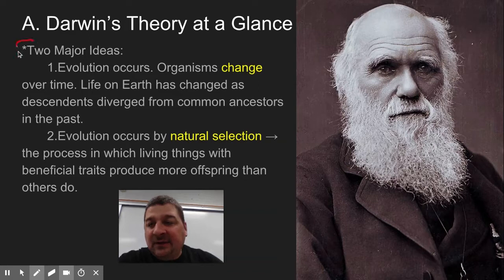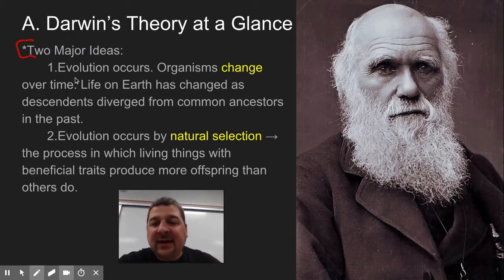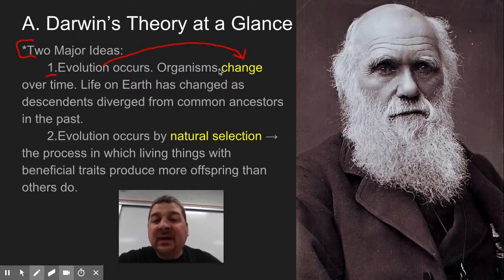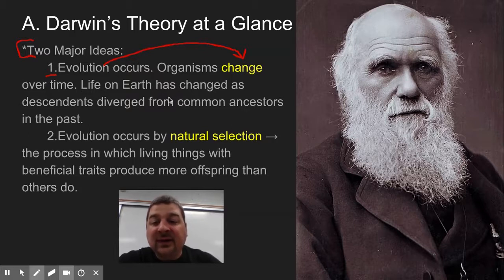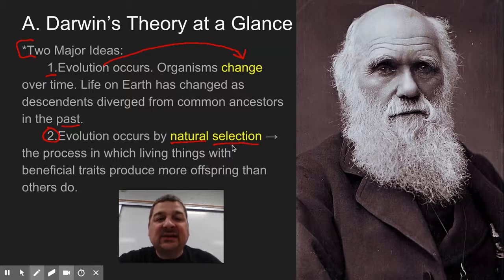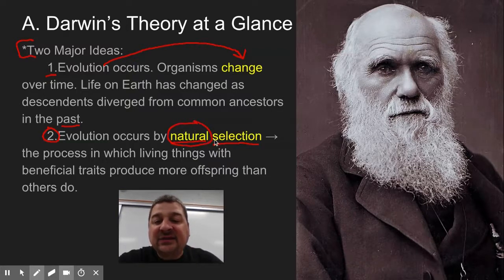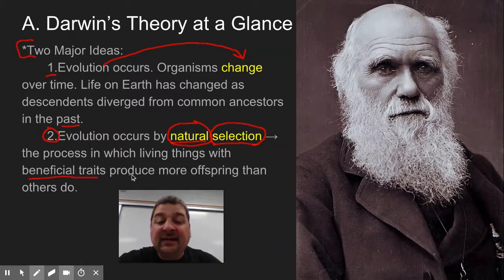First, let's look at the two major ideas of Darwin's theory of evolution. Number one: evolution occurs. The term evolution, or to evolve, means change over time. His idea was that organisms change over time — life on earth is not the same now as it was a long, long time ago. Key idea number two is how that occurs. The process Darwin presented is called natural selection. Darwin was not the first person to put forth an idea of evolution, but his idea of natural selection is what stuck and is generally accepted today. Nature selects things with beneficial traits, and those individuals are more likely to pass on those traits to their offspring, and those slow changes build up over time.